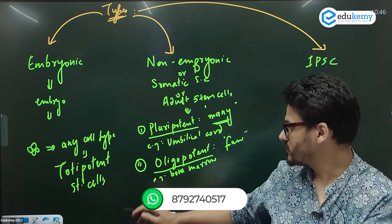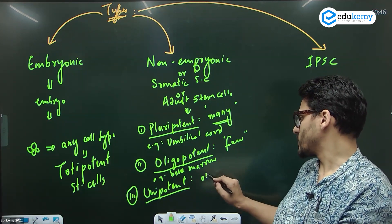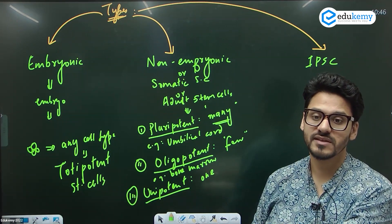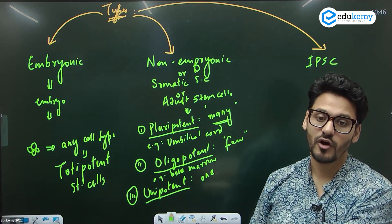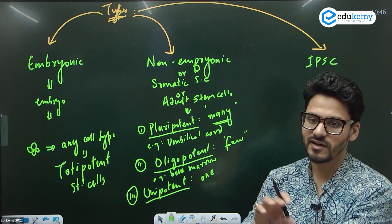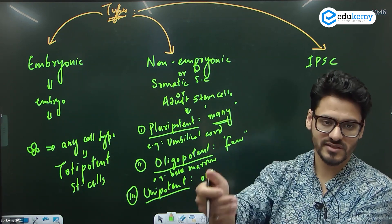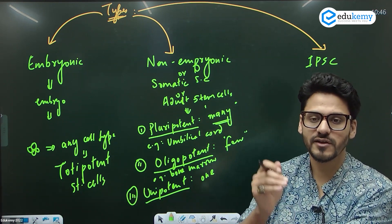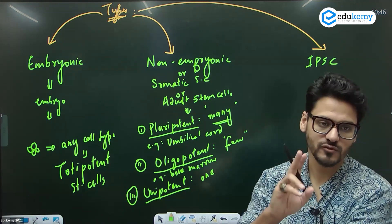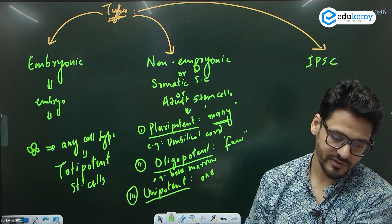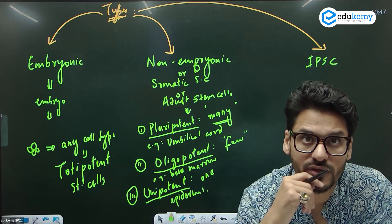Finally, we have unipotent stem cells. Unipotent means they can create only one cell type. For example, the stem cells behind skin cells — they only create skin cells by dividing themselves. So skin stem cells are unipotent. An example is epidermal cells. So this completes the non-embryonic category.